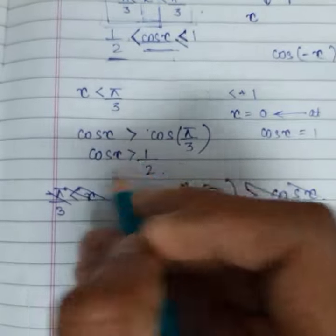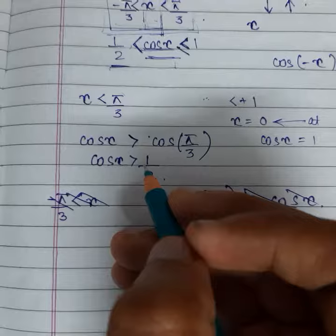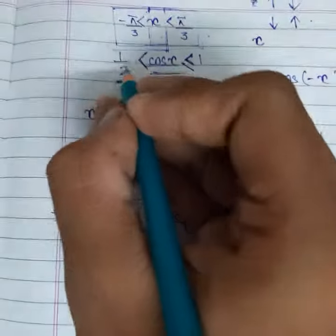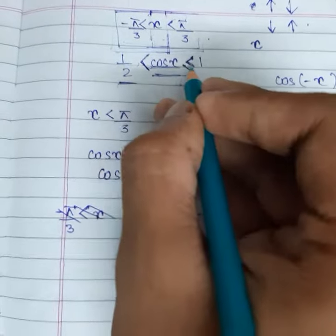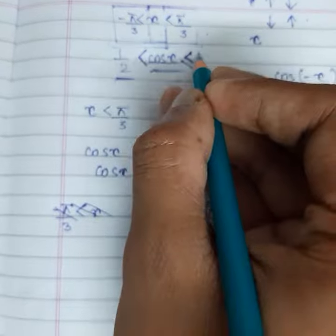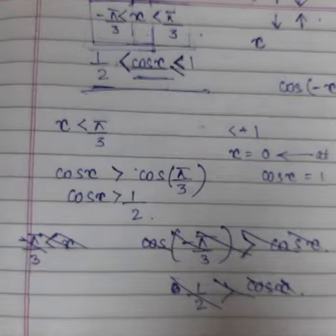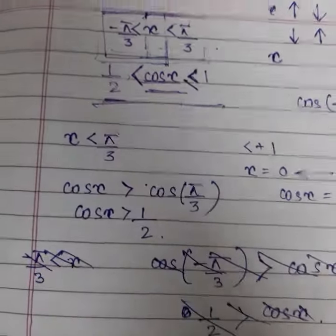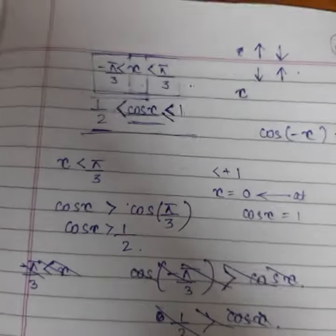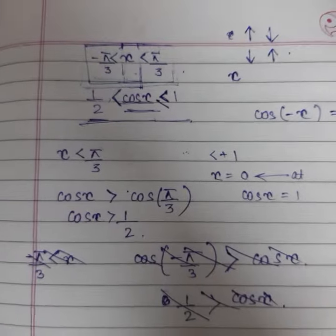We did this thing and cos x was turning out to be greater than half. So we put half less than cos x less than equal to 1. This is why that part of the question was written in such a way, and after that it's quite easy.